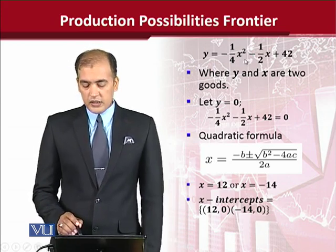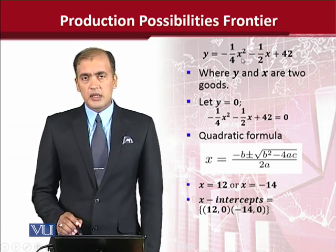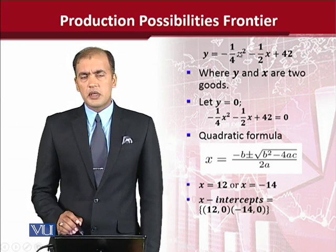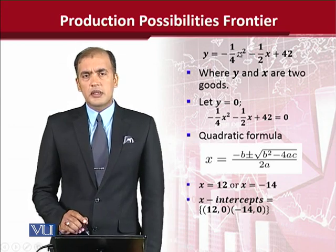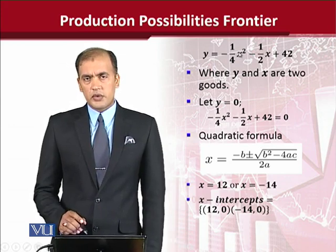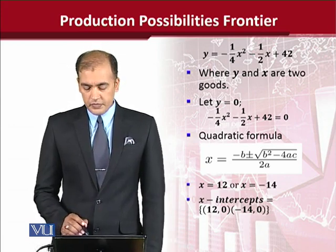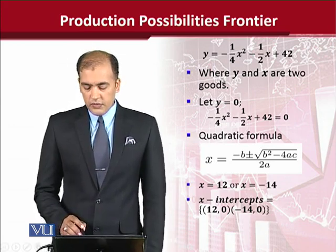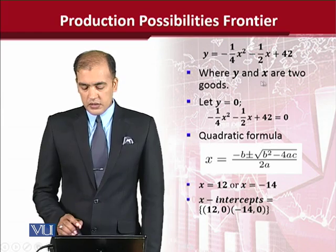Now x and y are the variables, and these are actually the goods that are produced — x and y are the two goods.